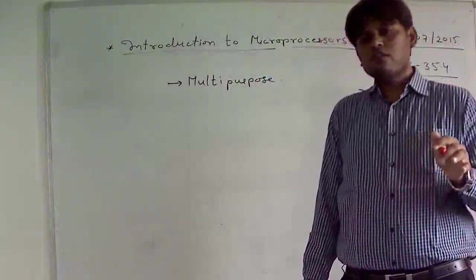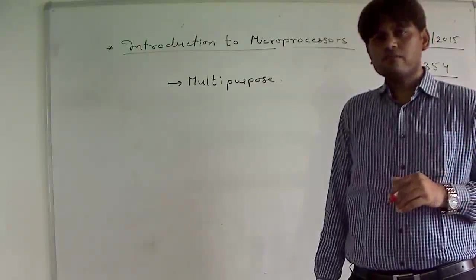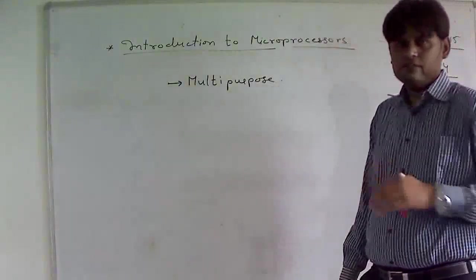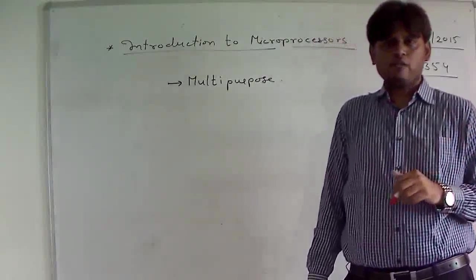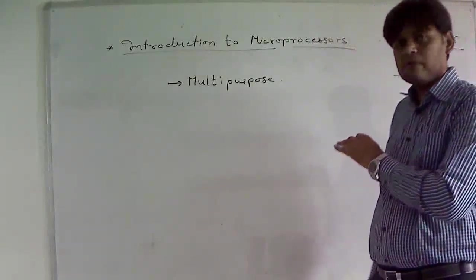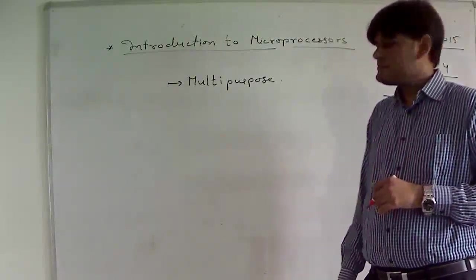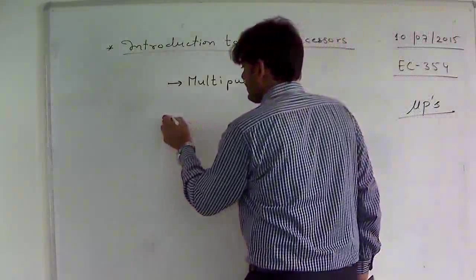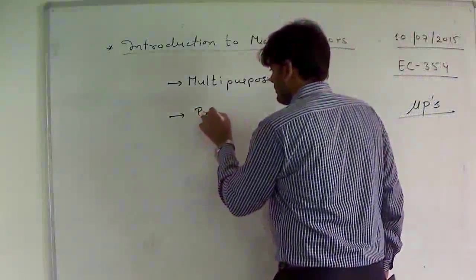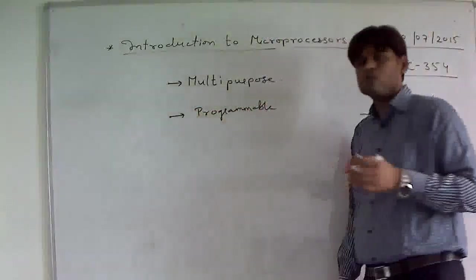We have seen microprocessors used in so many electronic applications for processing and controlling, so we can call microprocessor a multipurpose electronic device. There are so many applications of the microprocessor. Also, microprocessor is a programmable and many times we say it is a reprogrammable device.